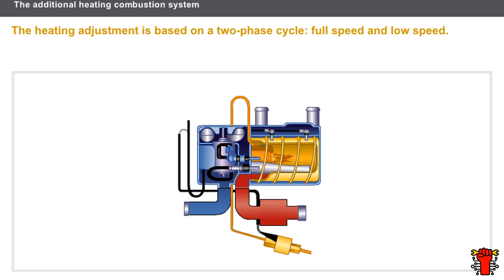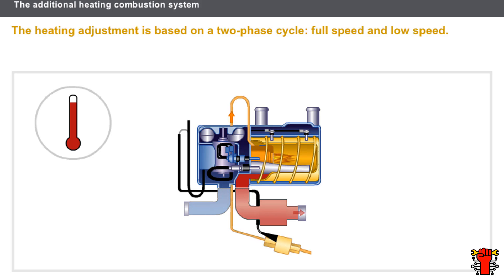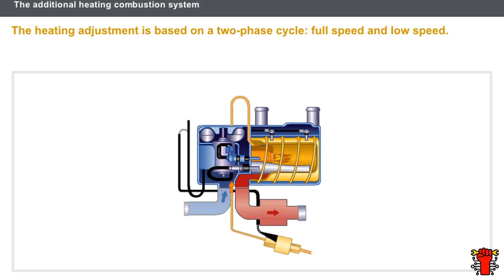Let us now look at the adjustment of additional combustion heating. This adjustment is based on a two-phase cycle: full speed and low speed. The speed depends on the temperature inside the boiler. Depending on the temperature, the device controls the supply of the metering pump and the blowing apparatus. When heating is activated, it alternates between full and low speed in order to adjust the internal temperature of the boiler.